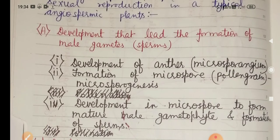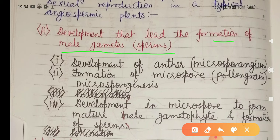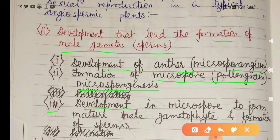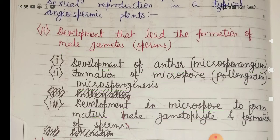First heading: development that leads to formation of male gametes or sperm. This is again divided into three main headings: development of anther or microsporangium, formation of microspore or pollen grains (microsporogenesis), and third, development of microspore to form mature male gametophyte and formation of sperm.